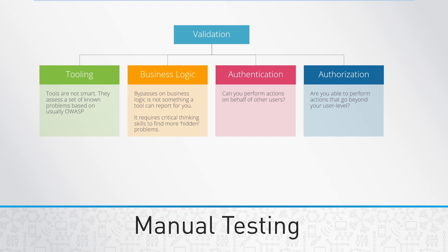Manual testing is really important and we'll go over that. Tools are not smart — they only operate based on a set of known problems. When you go over business logic bypasses, that's something a tool cannot do for you. Authentication bypasses — how do you perform actions on behalf of other users. Authorization bypasses — can you do something that goes beyond your user level. That's the type of stuff we'll do with the manual test.